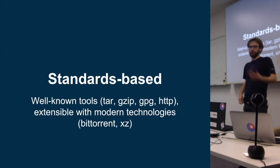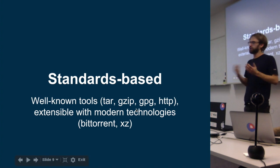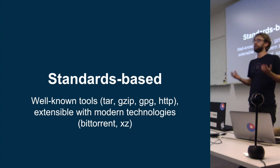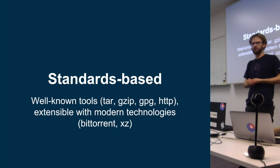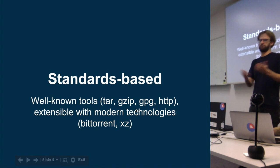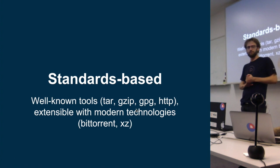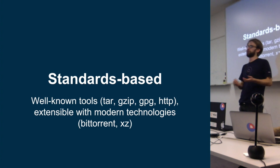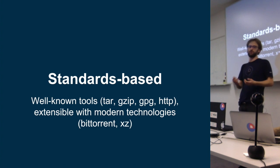The third thing is that we really want the specification to be based around well-known tools — things like TAR, GZIP, GPG — that have been around for years, are very well defined, and very ubiquitous. The goal of the spec should just be a way to glue these different standards together in a way that everyone can agree on. But the counterpoint is that the spec should be extensible to take advantage of more modern developments, like BitTorrent for distributing images or XZ, a much more modern compression algorithm than GZIP.